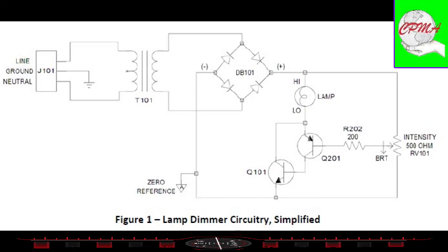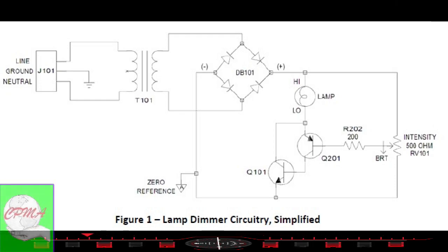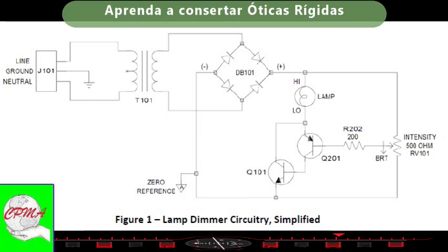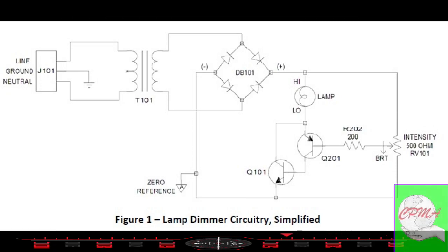Circuito dimmer da lâmpada, conforme a figura 1. É um diagrama esquemático simplificado do circuito dimmer da lâmpada. Este diagrama contém detalhes necessários para uma compreensão da operação básica do dimmer.